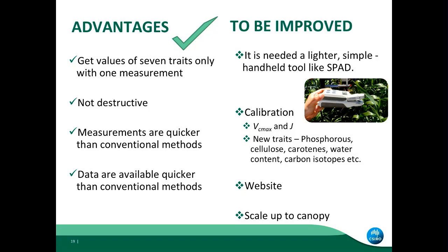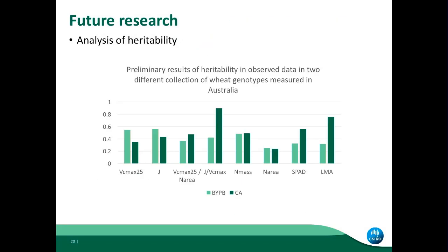And obviously, scale up to canopy. Leaf is good — I'm happy with that — but it's always good to go further. These are the cameras I'd like to try, but I haven't done it yet. Just some future research and something encouraging: this is heritability from the photosynthetic traits we've gotten from the observed data, and some of them look pretty good. If we can measure more and get more data, probably heritability can increase and be useful in the future.